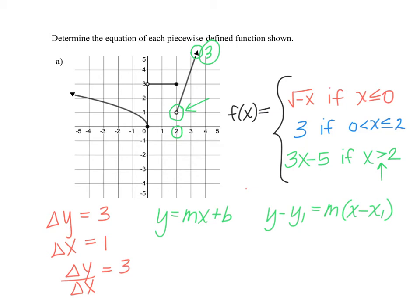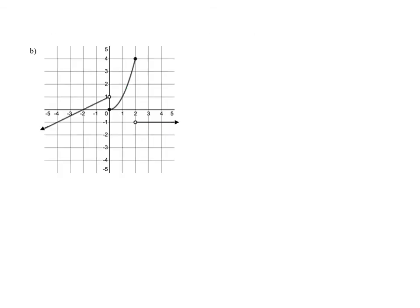Now let's look at a second example. This piecewise function also has three pieces. We'll name the function f of x and open a curly bracket. Working from left to right, the first piece is a line again. Picking two good points with integer values, we count going up 1 and to the right 2.